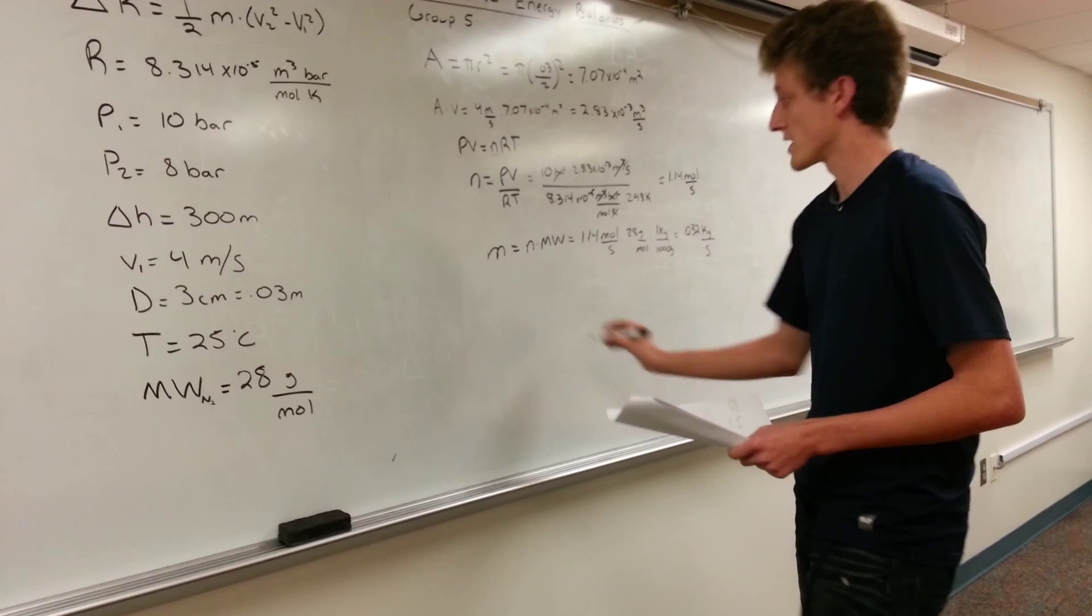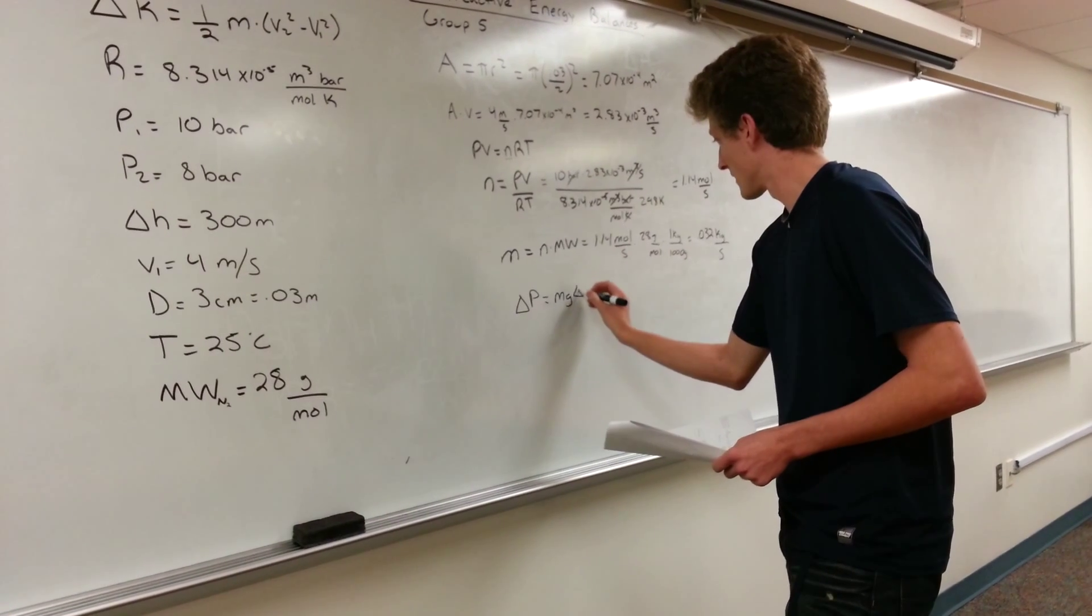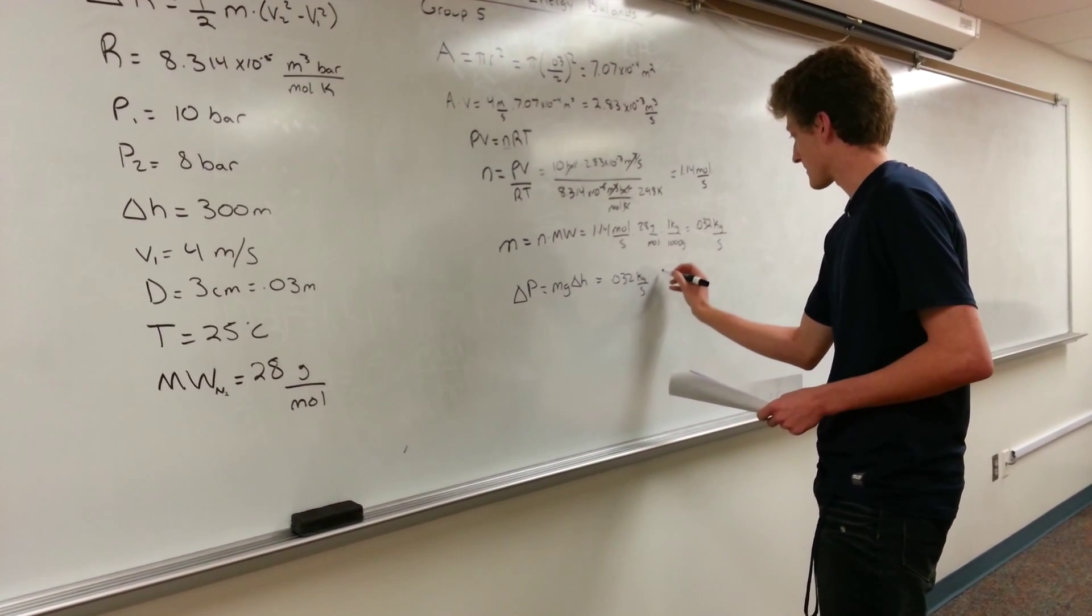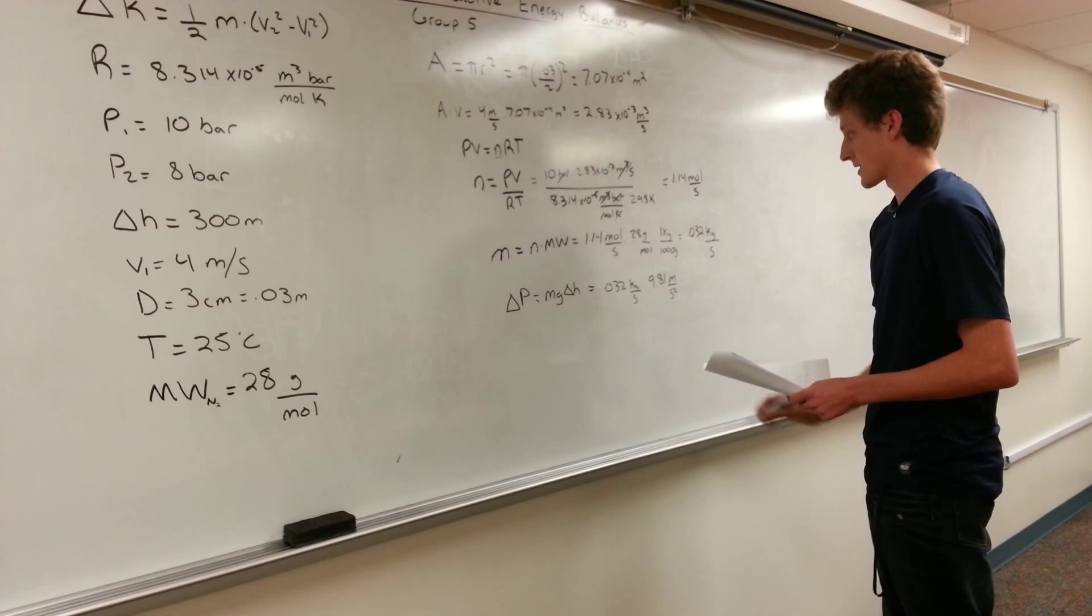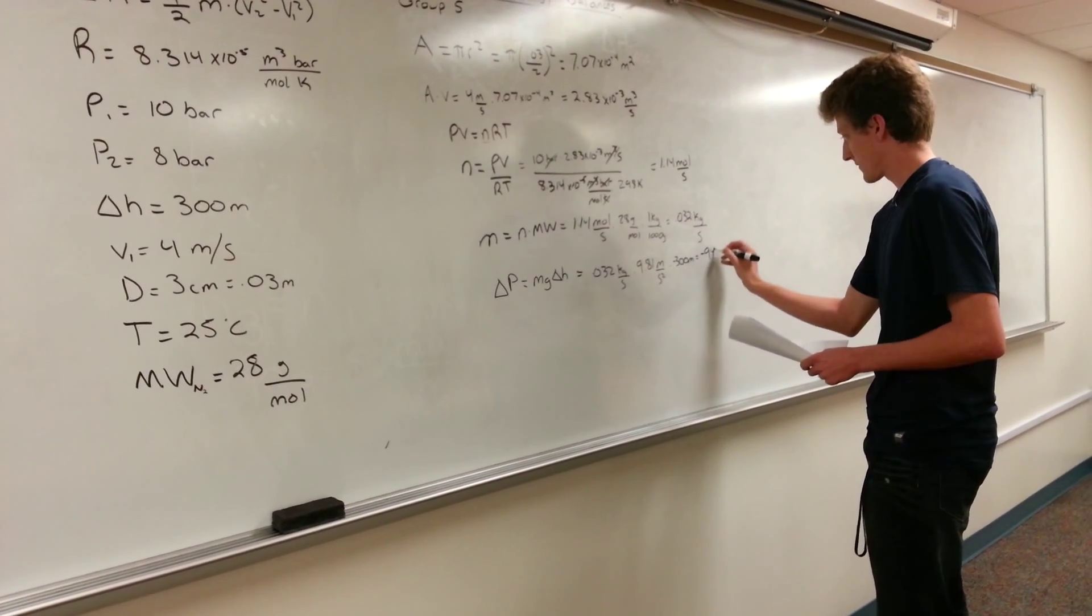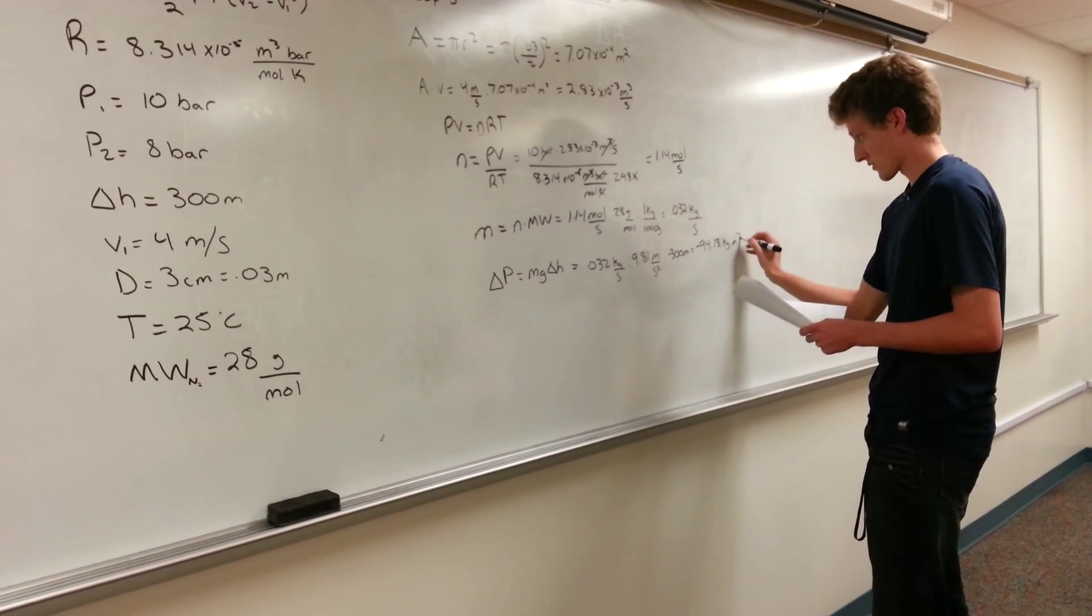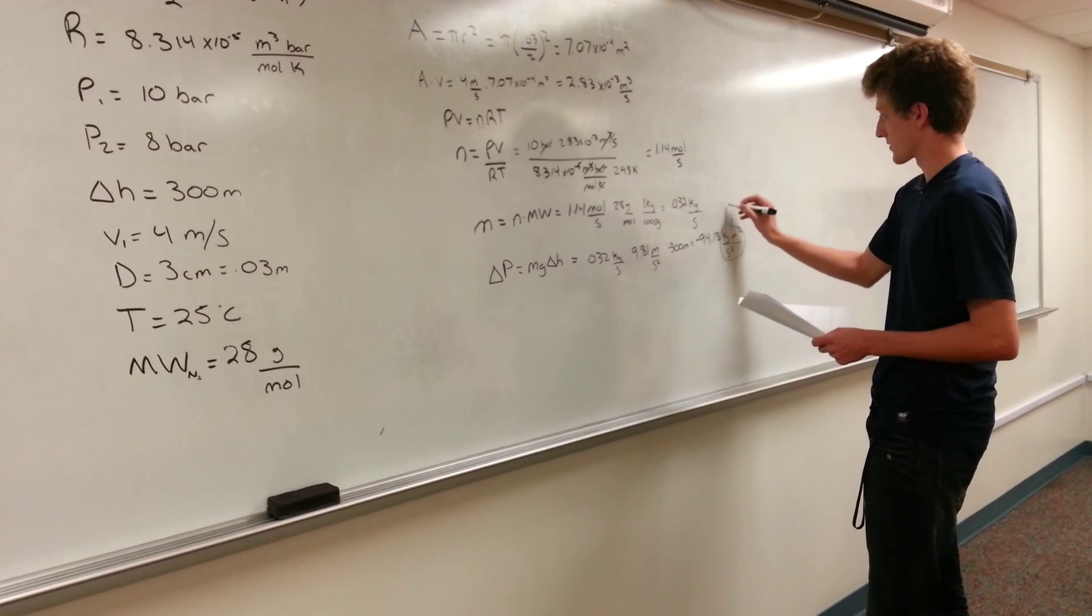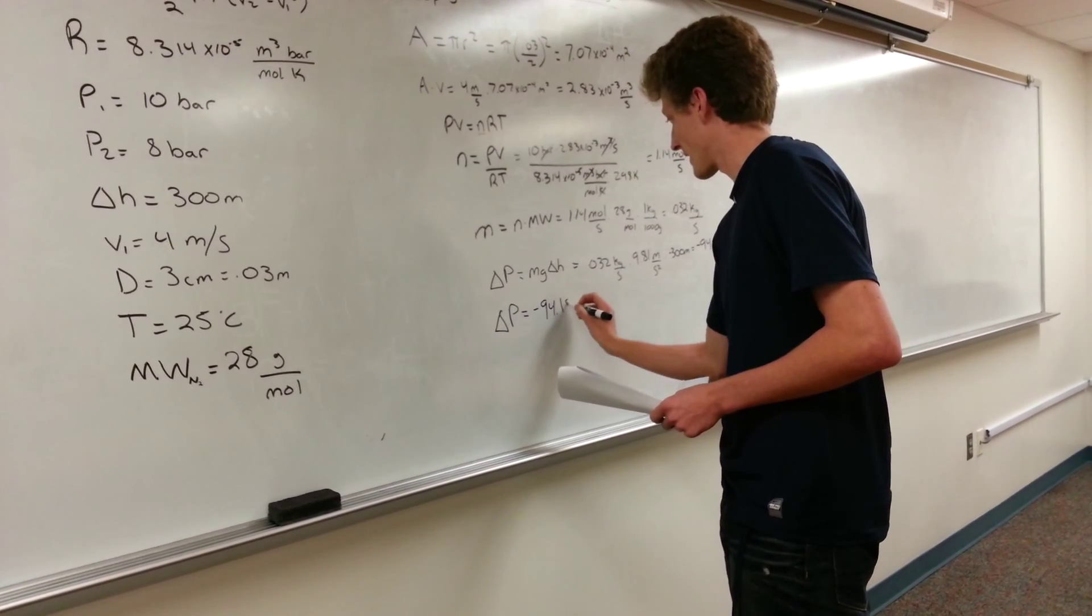We can now plug this into our change in potential energy equation. Then we get 0.032 kilograms per second times 9.81 meters per second squared times our change in height, which is negative 300 meters. And this gives us a value of negative 94.18 kilograms per meter squared per second cubed. And that is the same as a watt, so our change in potential energy is negative 94.18 watts.